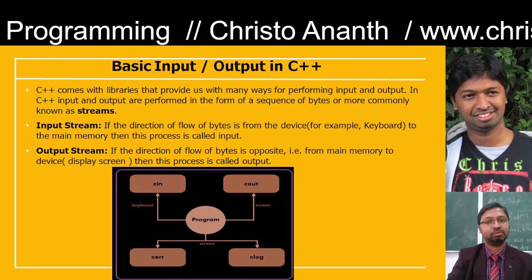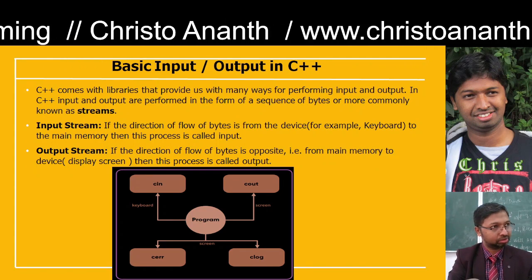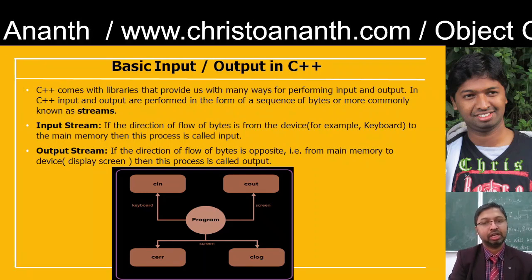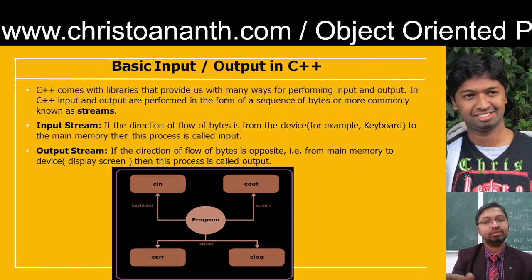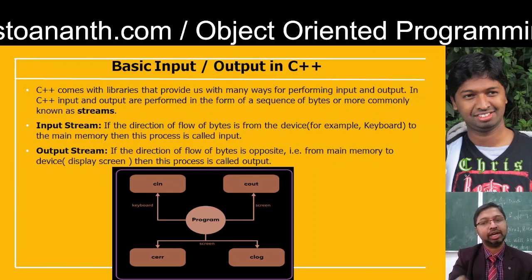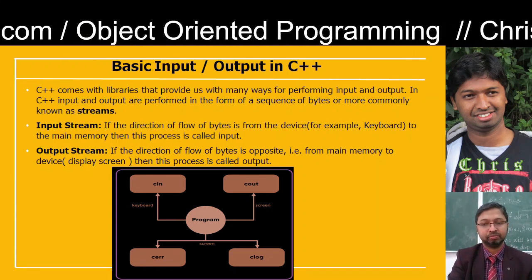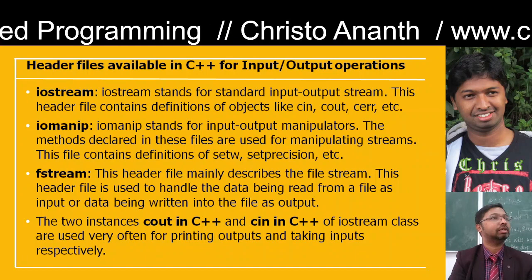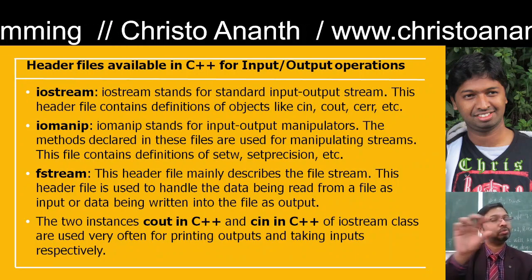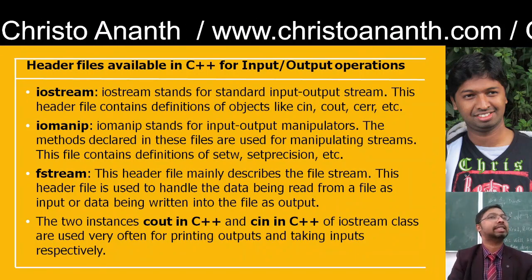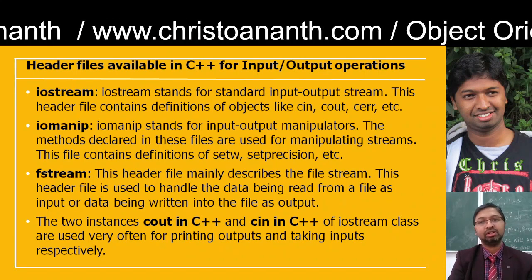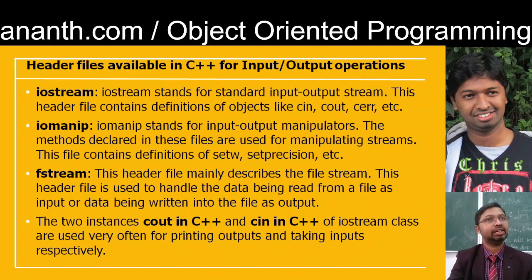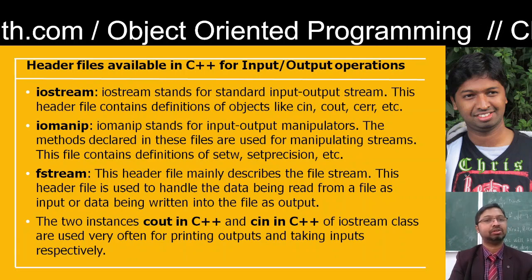In the program you have C input and C output, which means that we are inputting through the keyboard and outputting through the screen. On the screen you have two functions: cerr and cout. The input/output stream is nothing but a standard input/output stream library. Normally you will have header fields like cin, cout, and cerr.